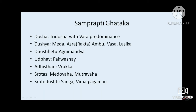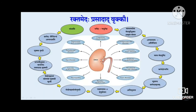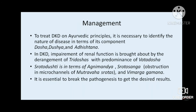To summarize the Ayurvedic samprapti of diabetic kidney disease: doshas will be tridosha with vata predominance in the later stages of complication, though initially kapha dosha predominates in prameha. The dushyas will be meda, asra, ambu, vasa, shukra. The adhisthana is pakvashaya. The srotas involved are medovaha srotas and mutravaha srotas, and srotodushti will be in terms of sanga and vimarga gamana.